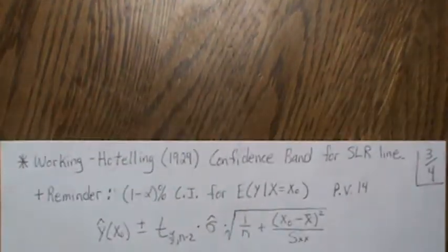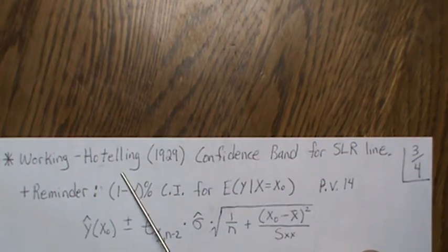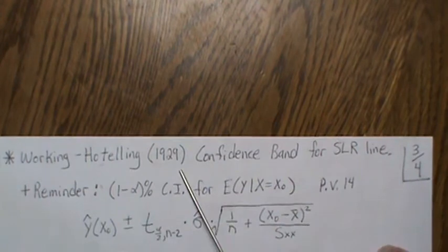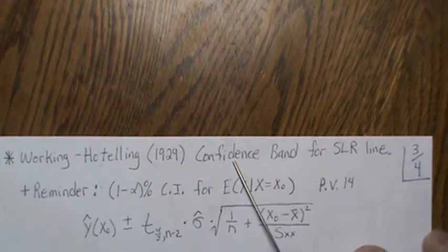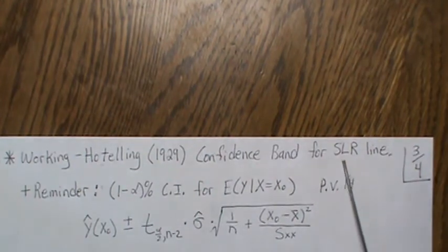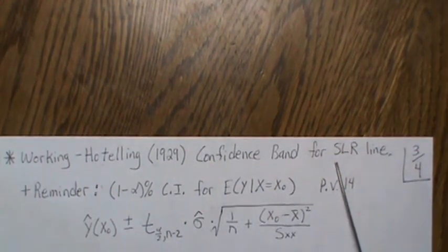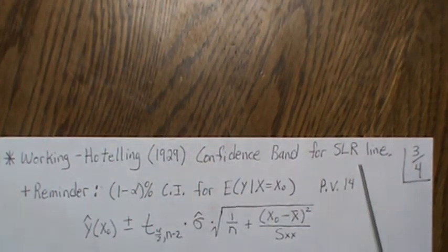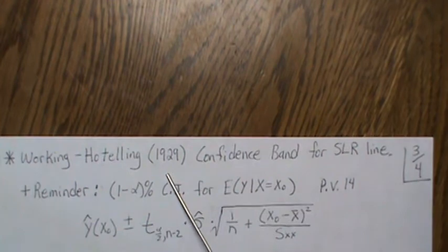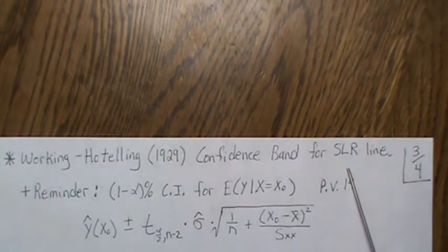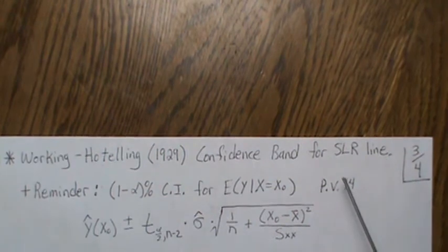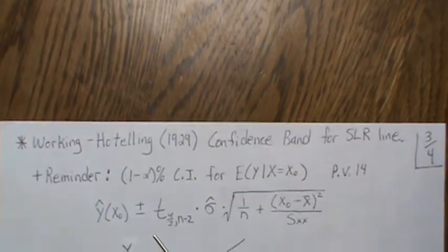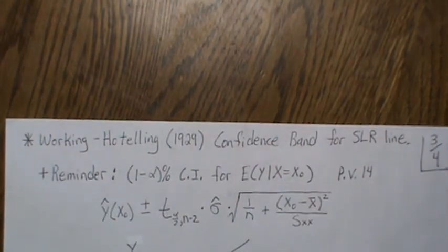Now the next adjustment we're going to look at is the Working-Hoteling confidence band. Working and Hoteling, two statisticians in 1929, developed this confidence band for the simple linear regression case. I've seen some references say they developed it for multiple linear regression in this article, but that's not true—it's specifically for simple linear regression. Since then, of course, it's been expanded to multiple linear regression.